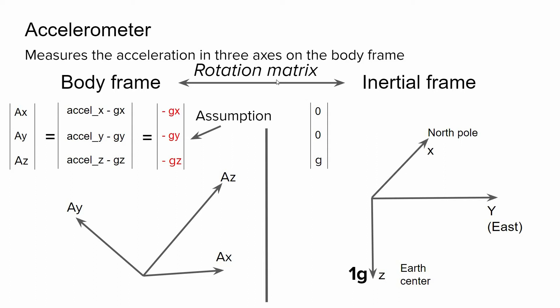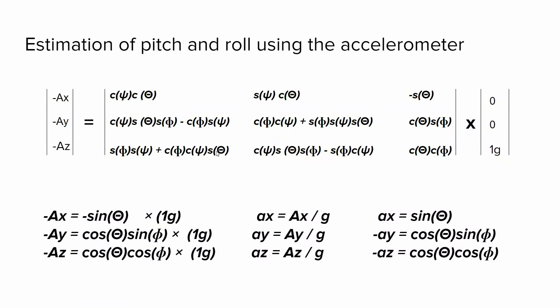Next, we can relate the accelerometer readings and the gravity using the rotation matrix based on our assumption, of course. So we have the rotation matrix and the 0, 0, g vector in the inertial frame. On the body frame, we have the minus values of the accelerometer readings.